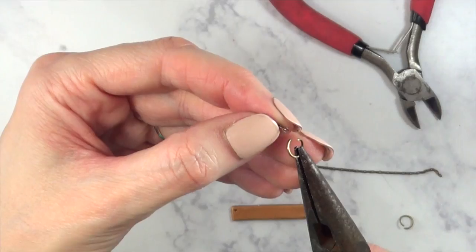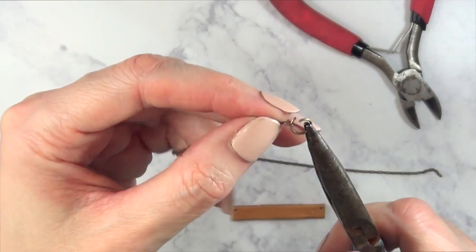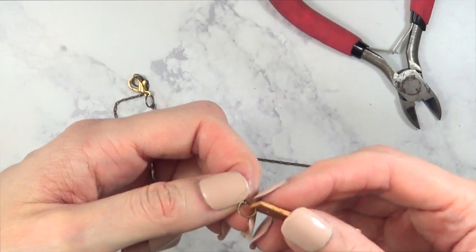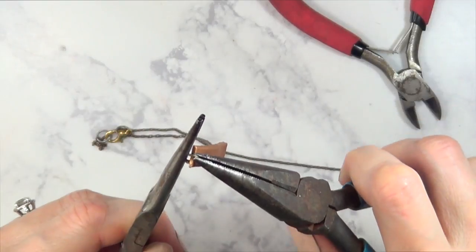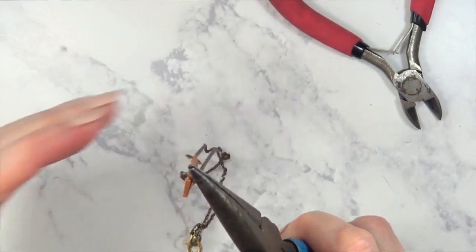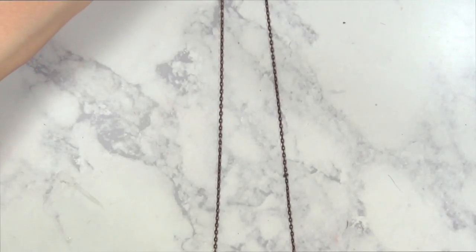I'm taking my pliers, I'm going to be opening my jump rings, putting in my necklace, putting my bar in there. Once I've done that, I'm just going to close the jump rings with my two pliers. I'm just going to repeat that on both sides.